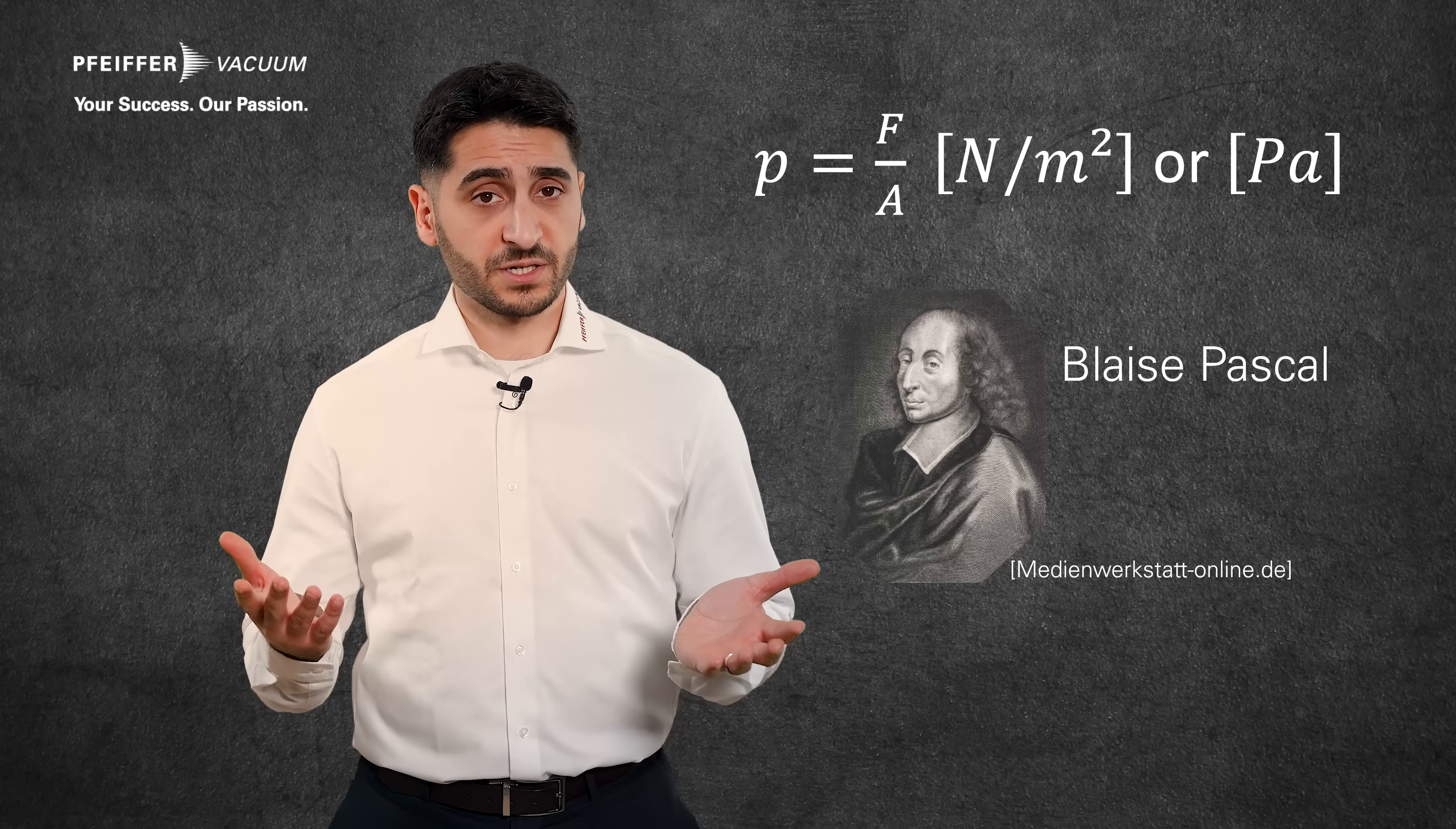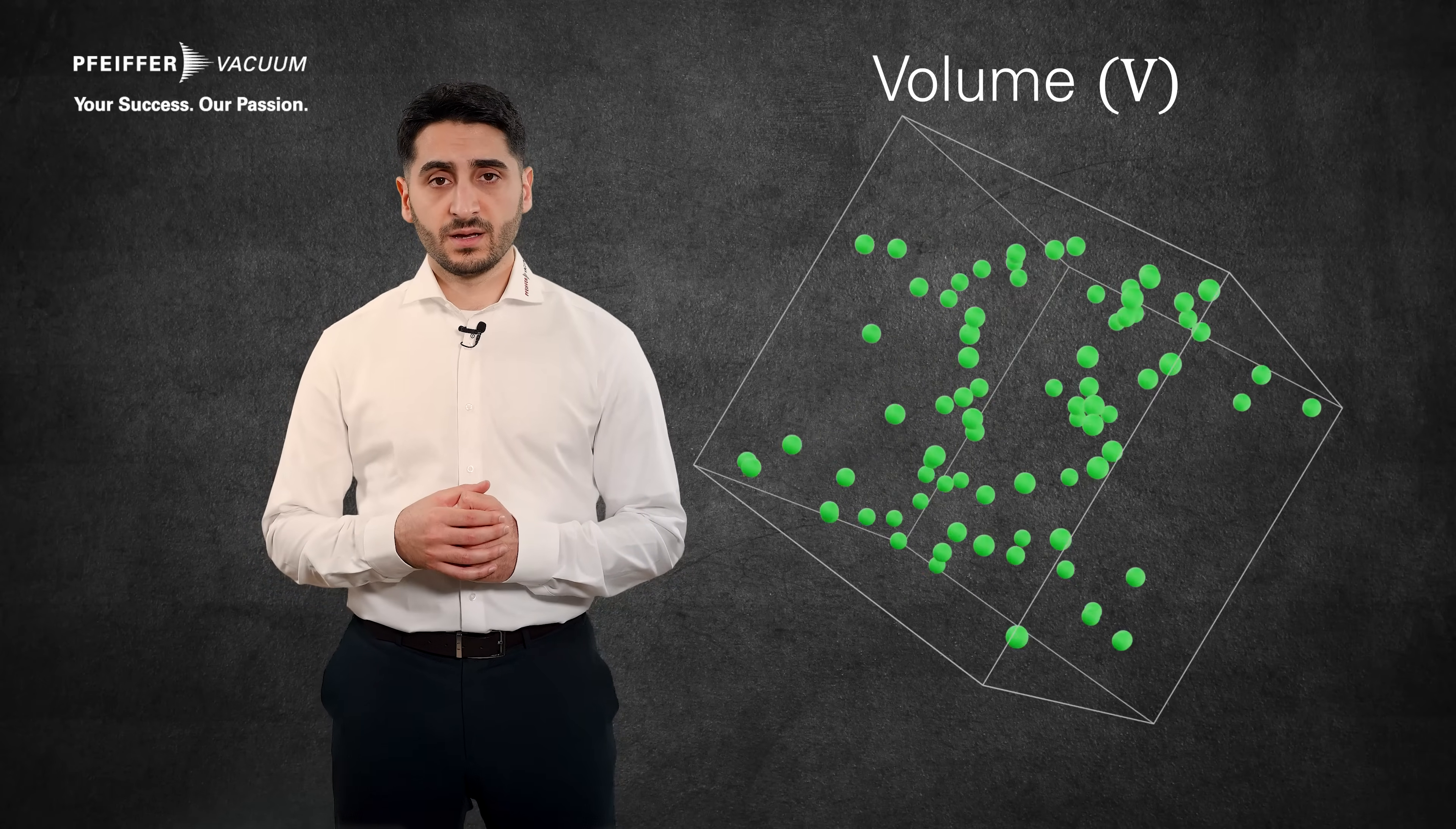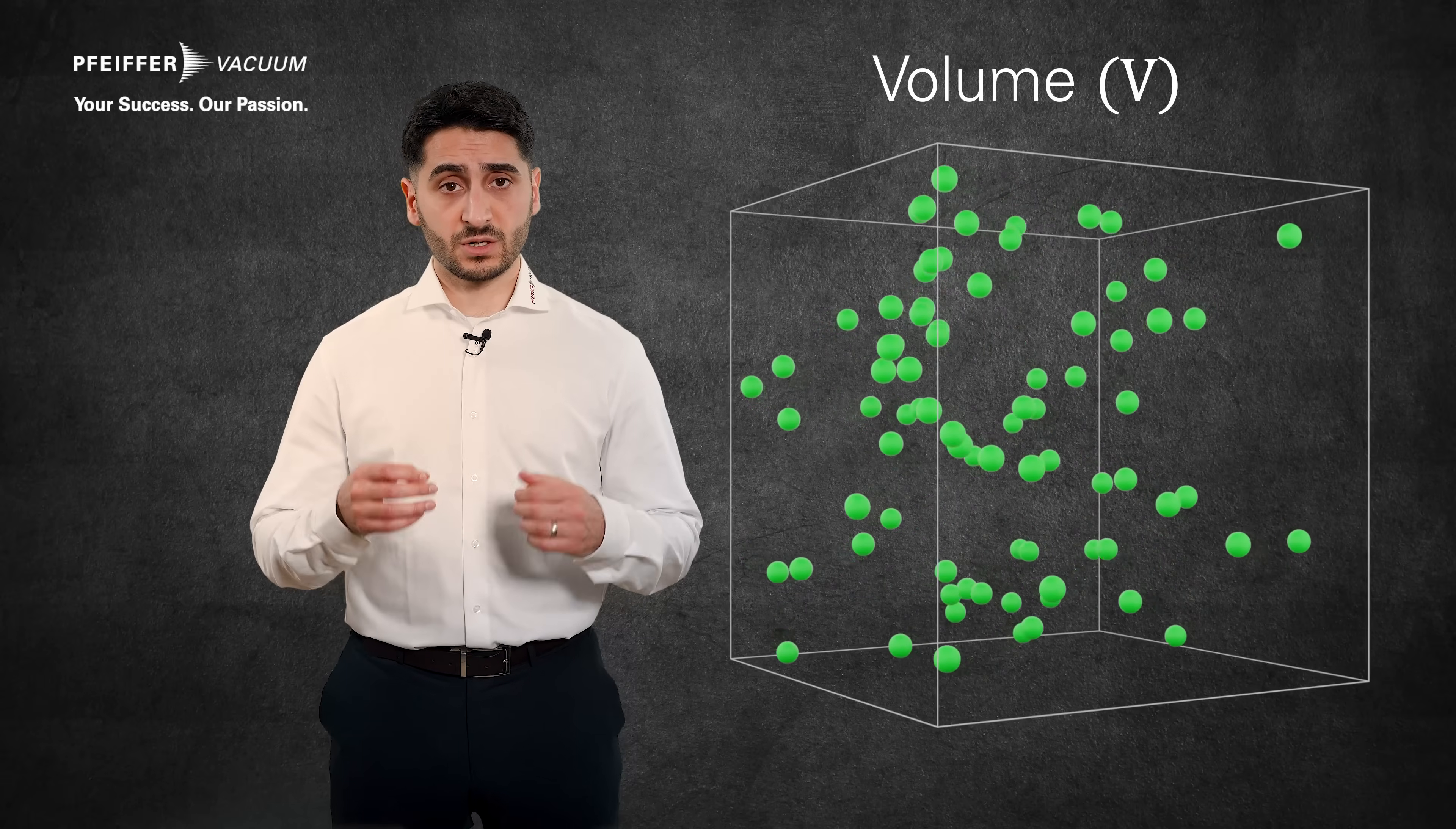But how can we describe pressure at the molecular or atomic level? Let's take a look at the closed volume V. Now let us assume that there is a gas particle in this volume which is constantly in motion.